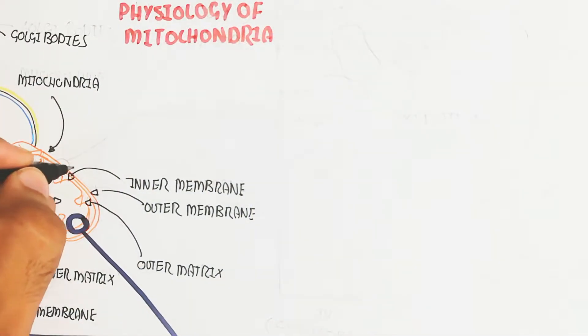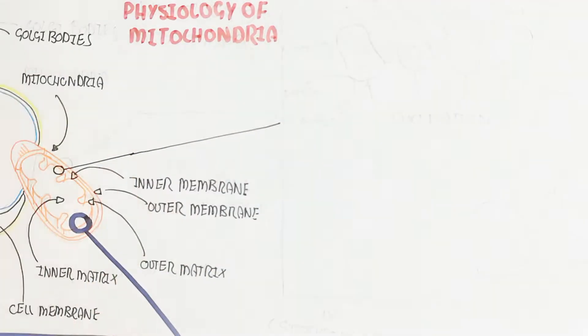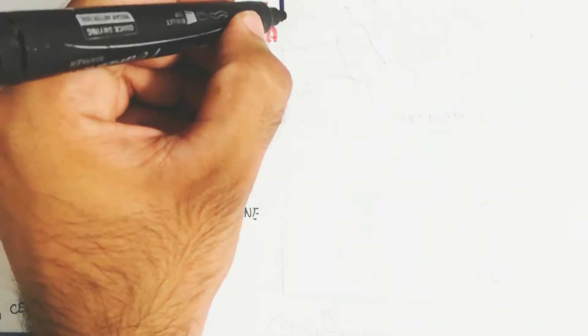Here is the mitochondria which contains inner mitochondrial membrane and matrix. So let's begin to understand in this short video.